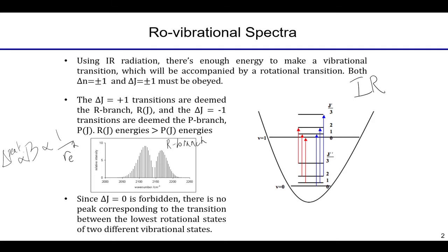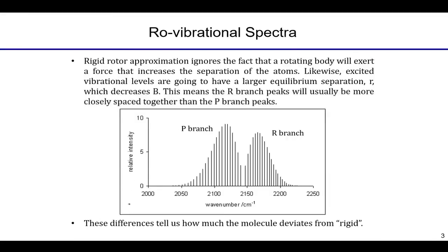What we want to focus on now is explaining why the shape of the overall envelope curve looks the way it does. These are individual peaks, but if I were to connect them I'd see a particular mathematical function. I understand why there's a gap in the middle — that's the forbidden transition. So let's think about and try to explain where these peak shapes come from.